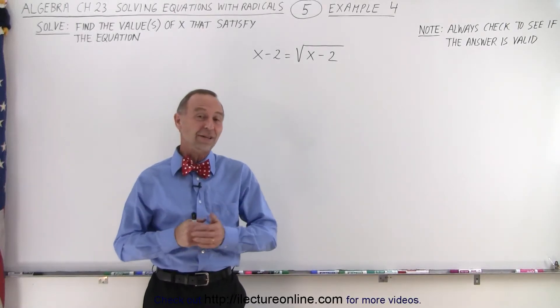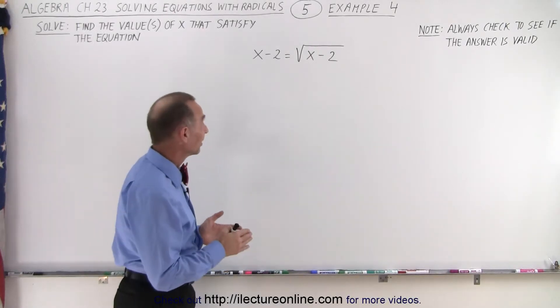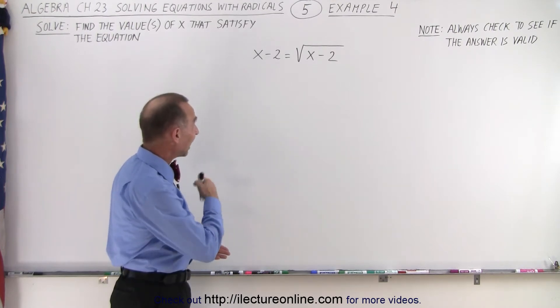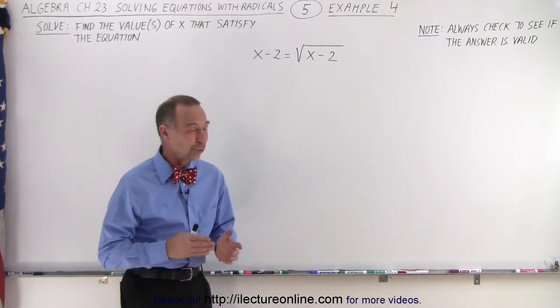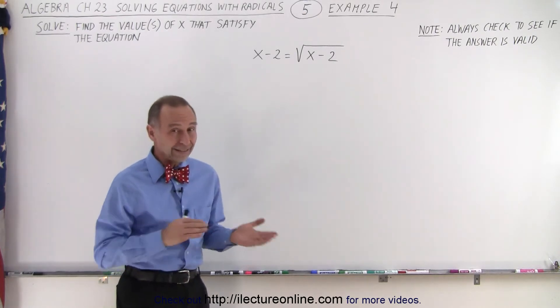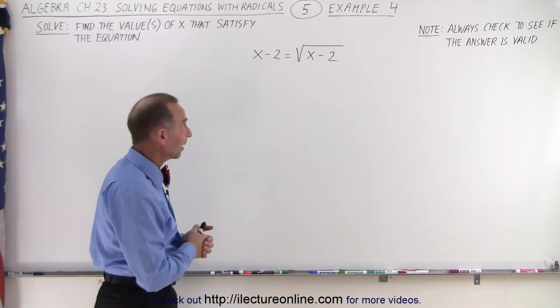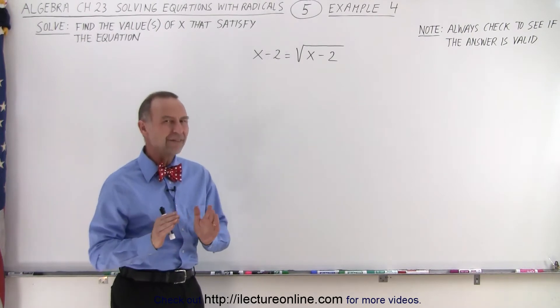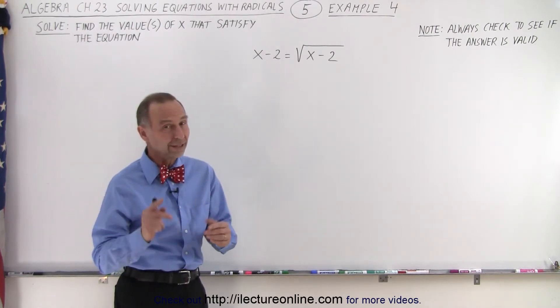Welcome to my lecture online. Our next example is kind of interesting. Notice that we have on the left side x minus 2 and on the right side the square root of x minus 2. And it seems kind of odd that the left side could indeed be equal to the right side. But let's not have any judgment before we actually try it.